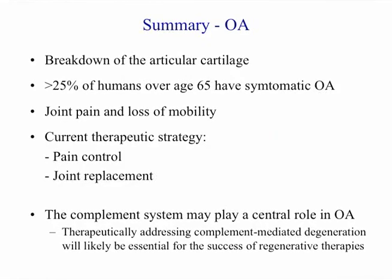In summary, osteoarthritis is the most common joint disease in the world, characterized by breakdown of articular cartilage. Greater than a quarter of all humans over age 65 have symptomatic OA causing joint pain and loss of mobility. Our current therapeutic strategy is based on pain control and ultimately joint replacement, and there is a tremendous clinical need for regenerative approaches. Based on the work in our laboratory, we've identified an unexpected and potentially critical role for the complement system in the pathogenesis of OA, and therapeutically addressing this underlying inflammatory process may be critical for the ultimate success of regenerative and stem cell therapies.